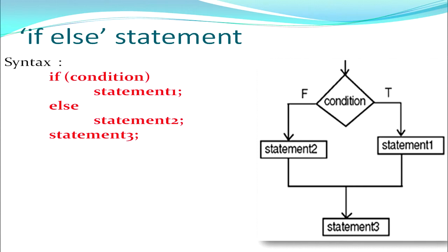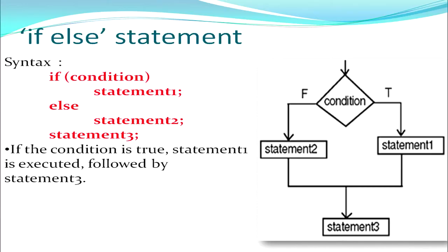Statement 3, as given in the syntax, will be executed in all circumstances — whether the condition is true or false. Statement 1 will be executed if and only if the condition is true; statement 2 will be executed if and only if the condition is false. So if the condition is true, statement 1 is executed followed by statement 3. If the condition is false, statement 2 is executed followed by statement 3, since statement 3 is outside the if statement and is a common statement.